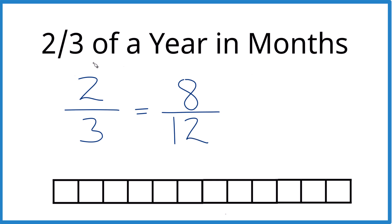And eight-twelfths, that's an equivalent fraction, same value as two-thirds. So now you can see we have our 12 months, and here's our eight. So eight months is two-thirds of a year in months. This is Dr. B. Thanks for watchin'.